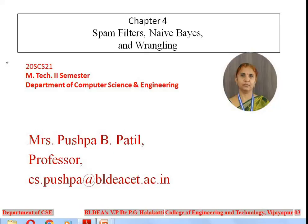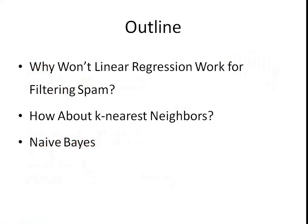Hello everyone. Last class we learned about the introduction to spam filters — what spam means, the purpose of sending spam email, and how to prevent spam email from reaching the inbox using different kinds of spam filters. Today we are going to learn about why the linear regression algorithm does not work for spam filtering, whether k-nearest neighbor works well for spam filtering, and finally the Naive Bayes algorithm used for spam filtering and how it works.